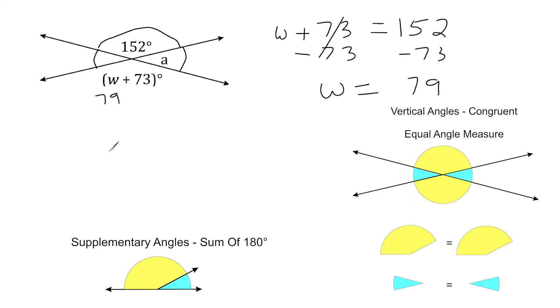So we know that whatever the measure of A is, plus the 152 degree angle, is going to have a sum of 180 degrees. So what we're going to do is subtract 152 from 180 to figure out what A is equal to. And when you subtract those two values, we end up getting 28 degrees.